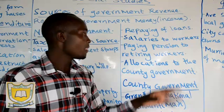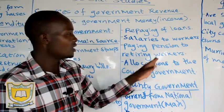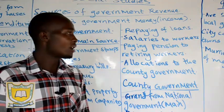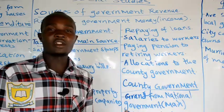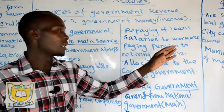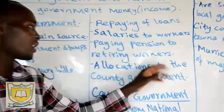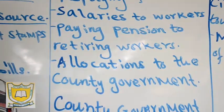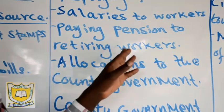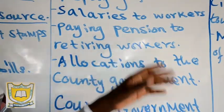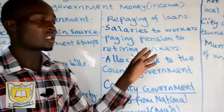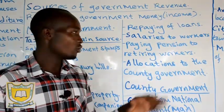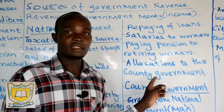Then we have salaries. The government pays salaries to civil servants — a police officer after working needs a salary, and the same applies to directors, Cabinet Secretaries, and anybody who works for the government. Then we have paying pension for retiring workers. Any civil servant or government officer who is retiring is normally given some money — worth millions — to help them settle a good life after serving the government for many years.